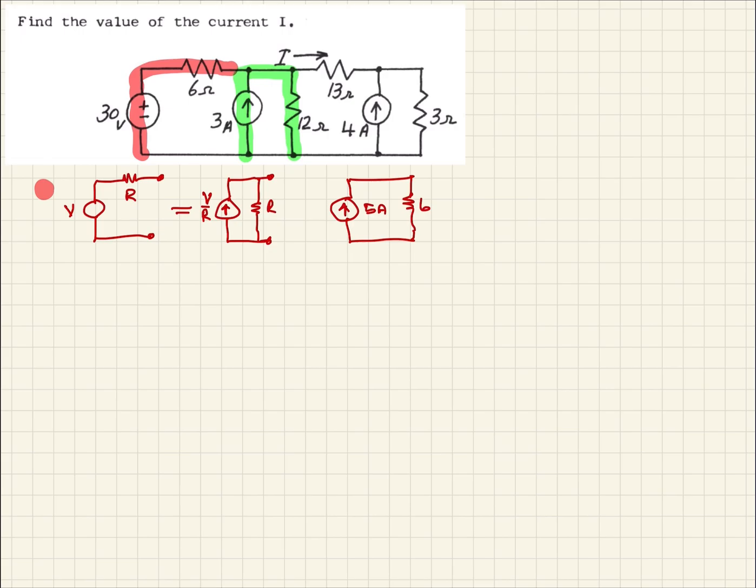So let's do that. When we do, that means we have this current source here, which we said was 3 amps, and then this resistance, which is 12 ohms.